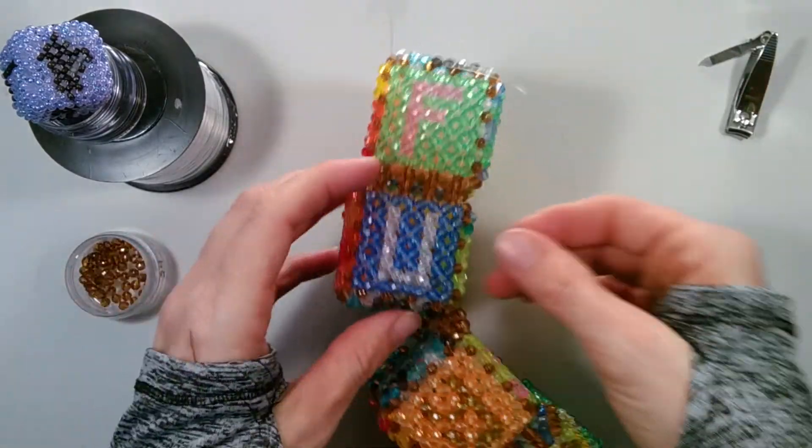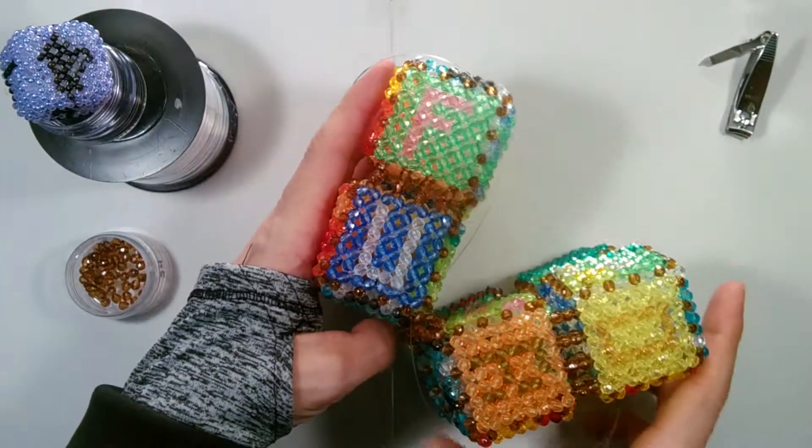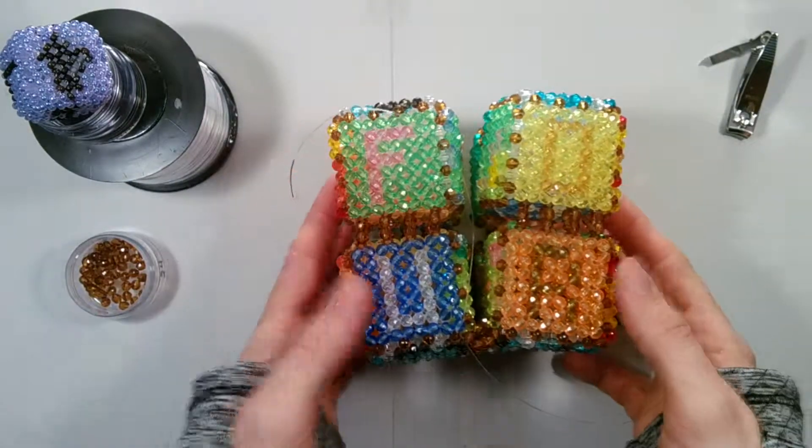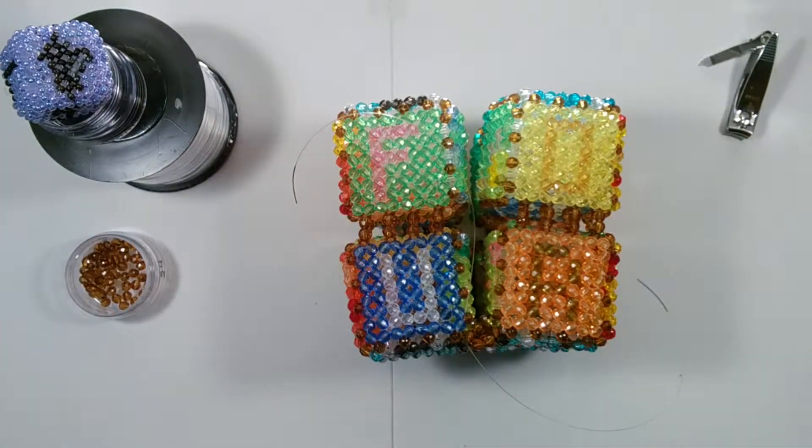And then you can thread about six to eight beads and clip off the excess. And there we have our Four Seasons folding cube. I hope you've enjoyed the project and I hope to see you in the next one.